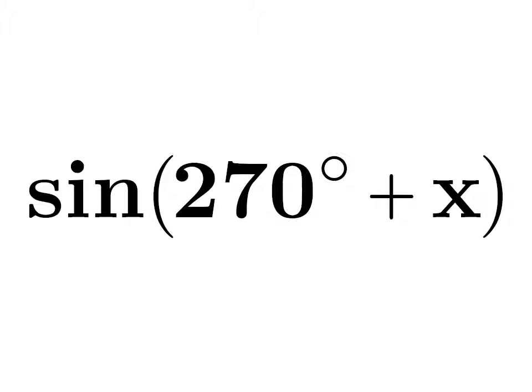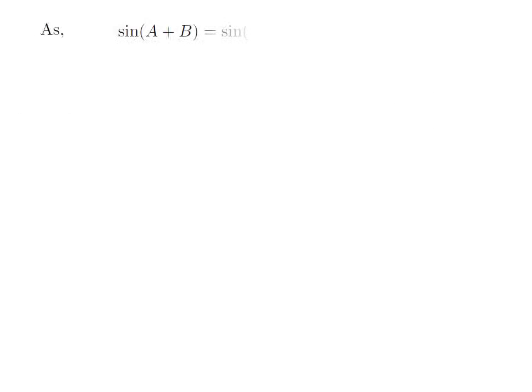In this video, we will learn to find the value of sine of 270 degree plus x. As we know, the trigonometry identity sine of a plus b is equal to sine of a into cosine of b plus sine of b into cosine of a.